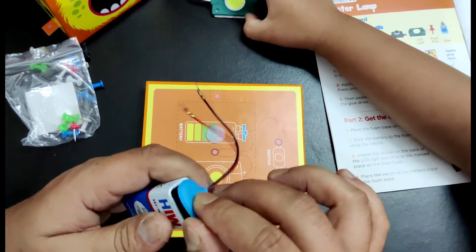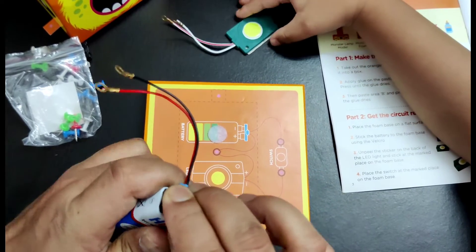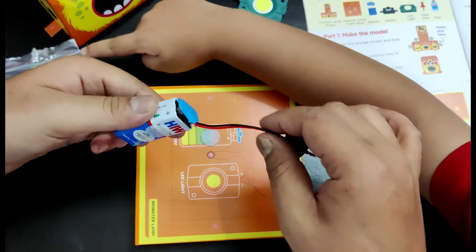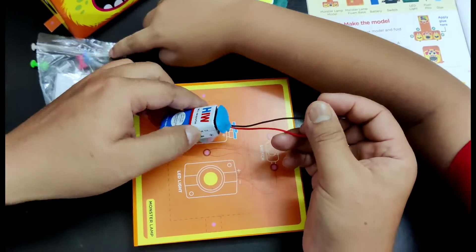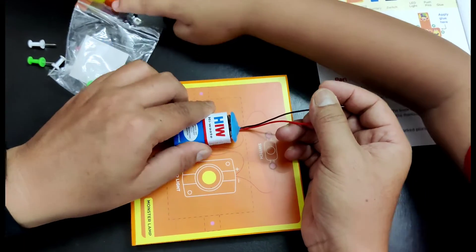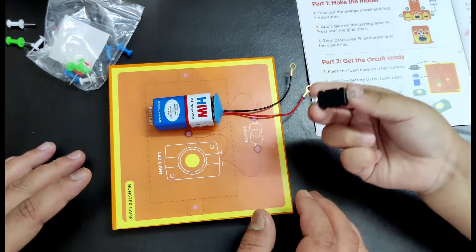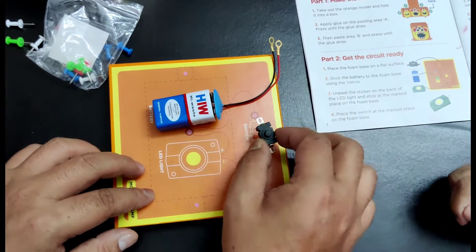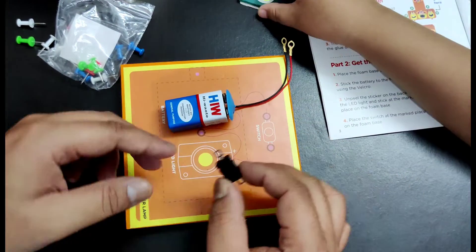So let's connect. Let's put the battery here in the foam base, and then we need the switch. The switch will be on its place here, so I'm putting the switch over here.